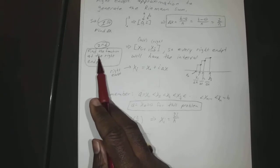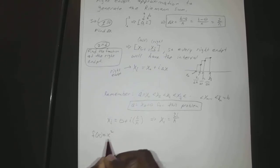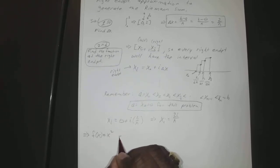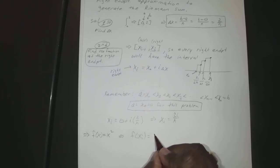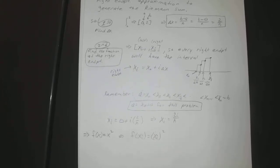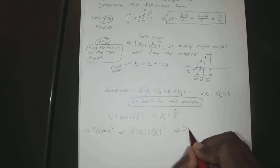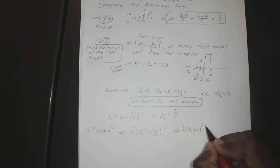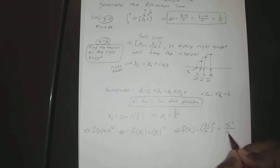So that gave us our x sub i. Now we'll use that to find the function at the right endpoint. Since f of x equals x squared, then f of x sub i equals x sub i squared. Since x sub i equals 2i over n, that means f of x sub i equals (2i/n) squared, or 4i² over n². This is our function at the right endpoint.